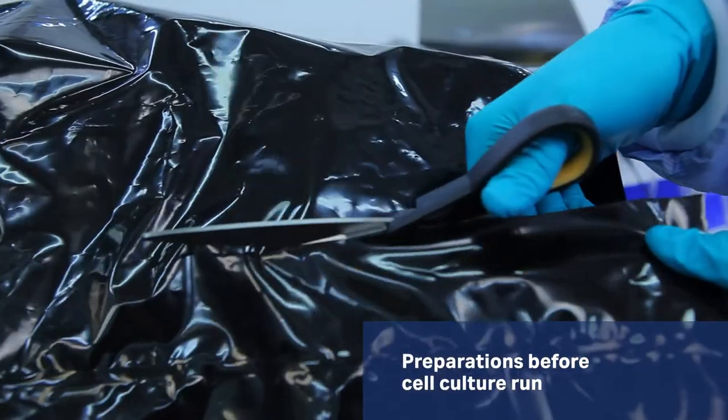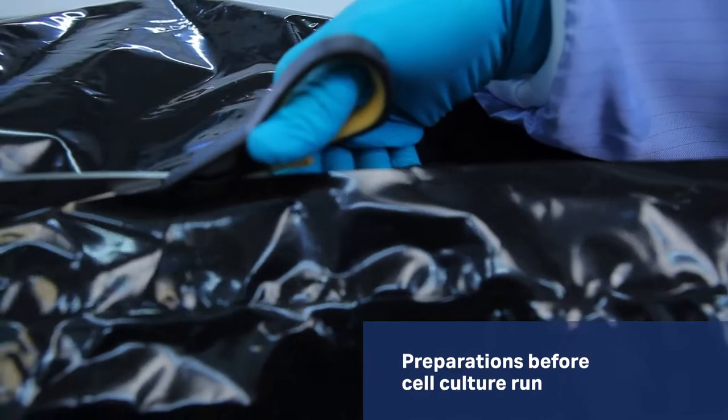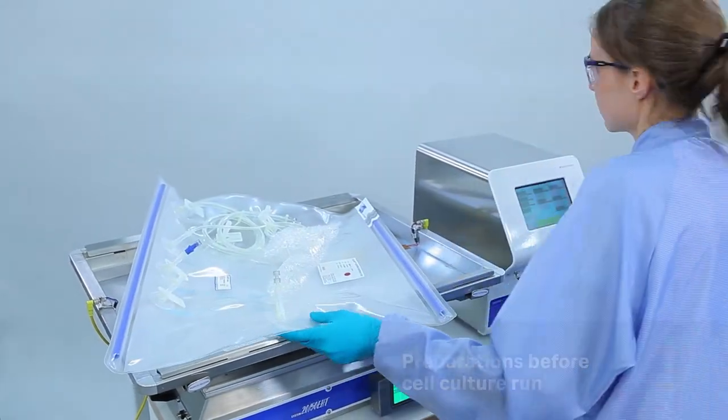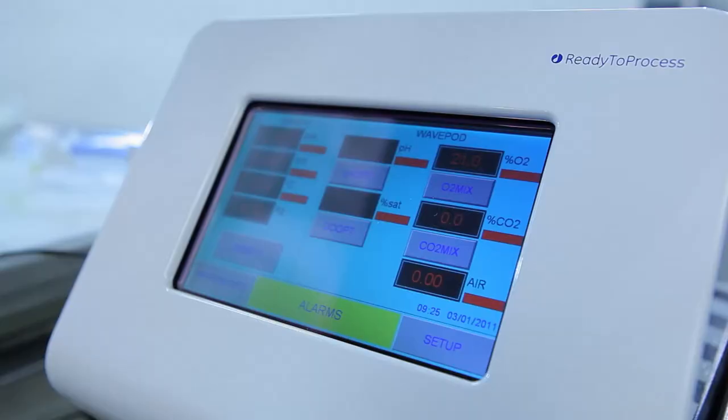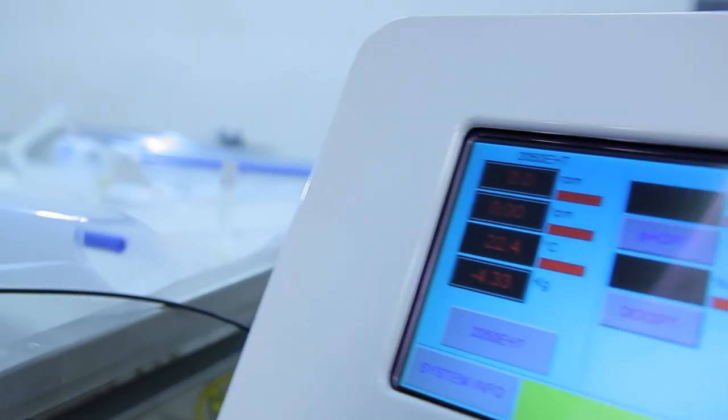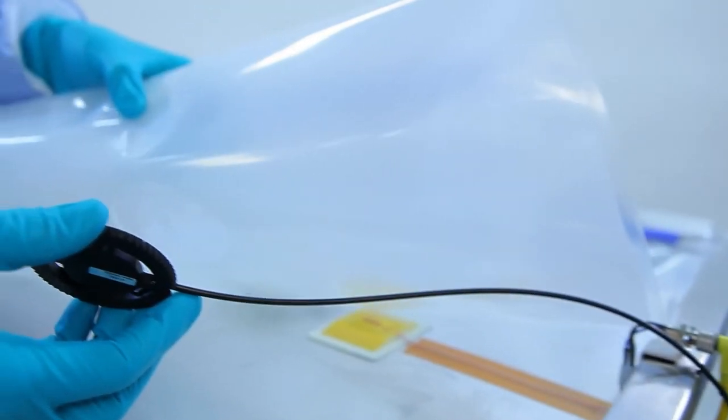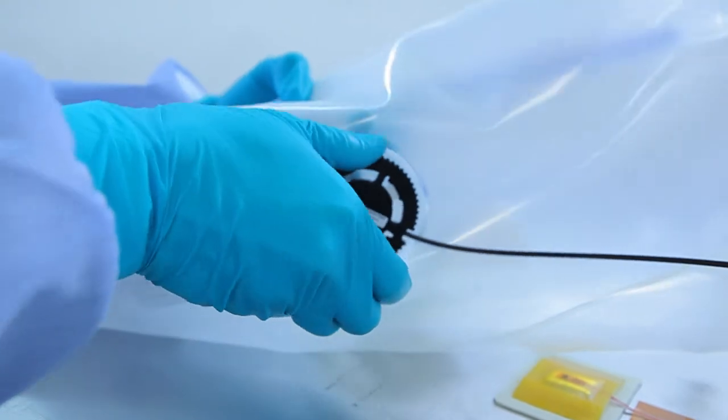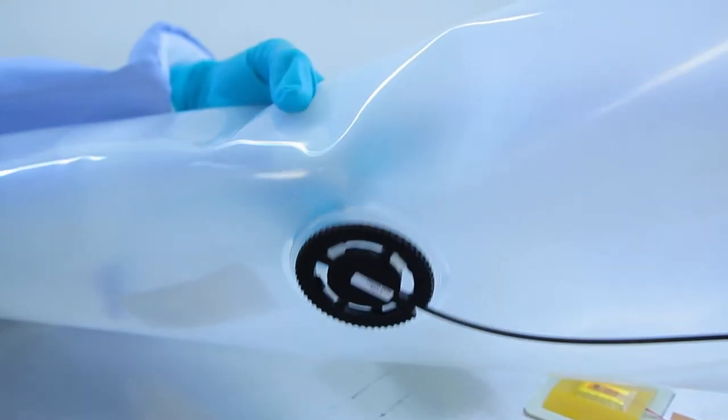When starting up your run, begin by removing the cover bag of the cell bag bioreactor. The WavePod 2 measures and controls pH and dissolved oxygen during the run. Place the pH bag adapter with the sensor facing the pH bag port. Rotate the bag adapter clockwise to fix the parts to each other.